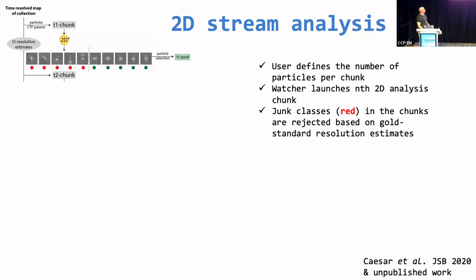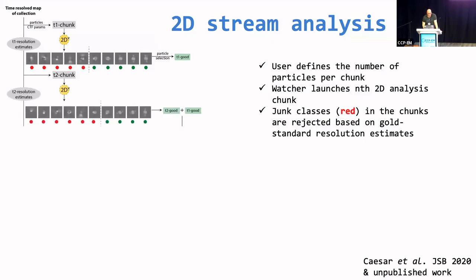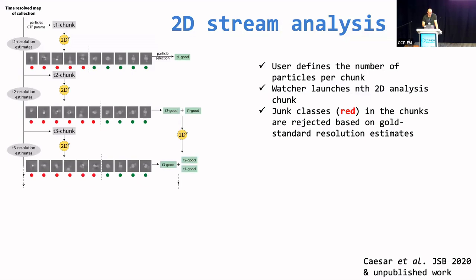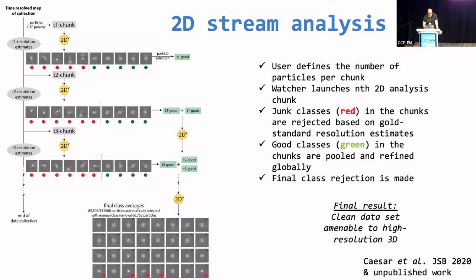The idea behind the 2D stream analysis is very simple. The user defines the number of particles per chunk. The watcher launches the N-2D analysis chunk, and junk classes — marked here with red dots — are rejected based on gold standard resolution estimates. The next chunk of particles that becomes available is analyzed in the same way, completely independently. And then, as particles classified as good become identified, they are pooled together and refined to create a global solution. Already after the second chunk, this global solution is created and a number of classes are dynamically updated as the process continues. The final result is a clean dataset for high-resolution 3D reconstruction.